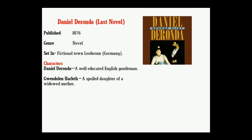Daniel Deronda was published in 1876. It is set in the fictional town of Leubronn in Germany. Main characters: Daniel Deronda and Gwendolen.